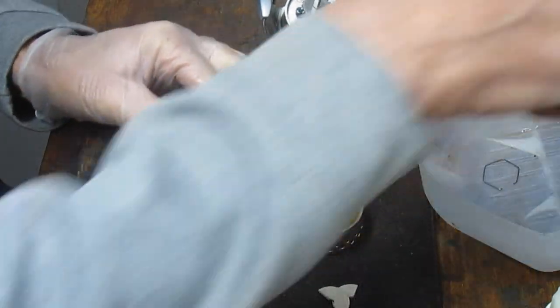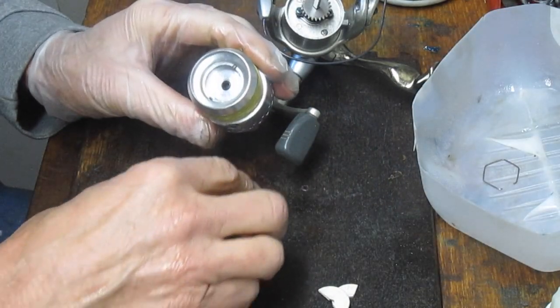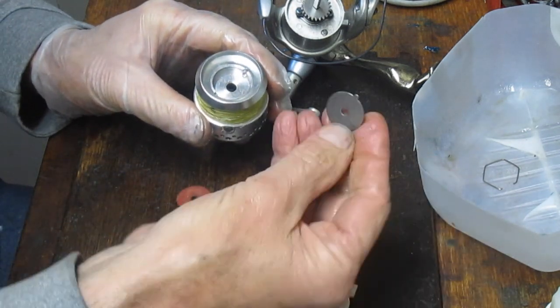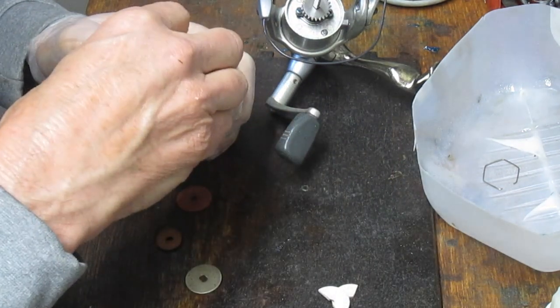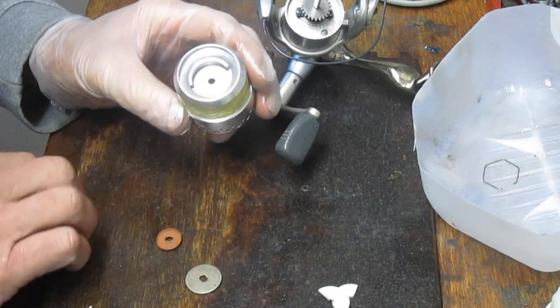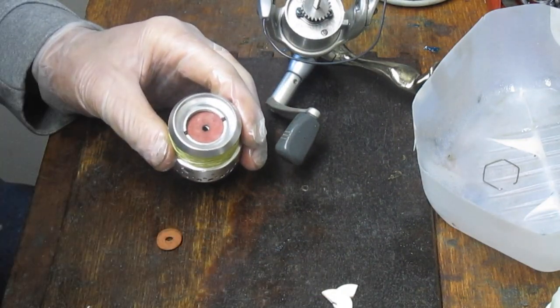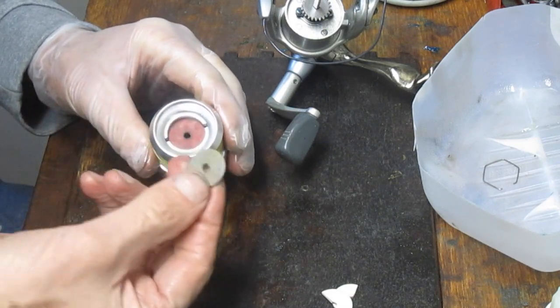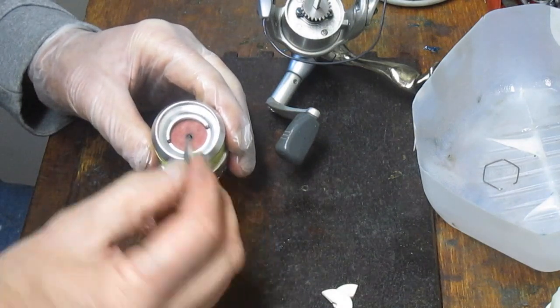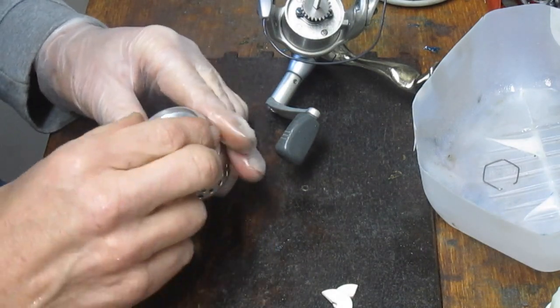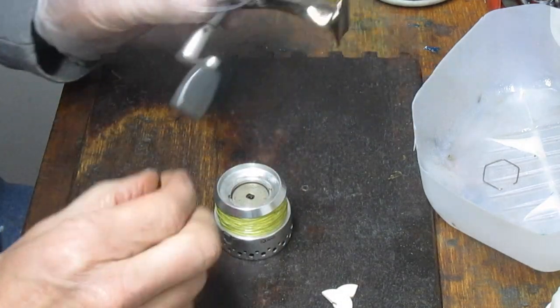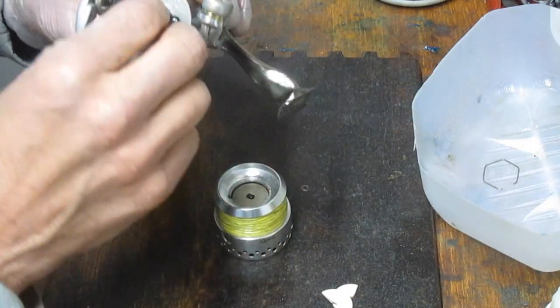All right. So according to that then, what we want to do is we want to put that eared washer in first. We had the red one down below there. Then we want to put the red one in. Now that white one would be next, but we don't have a white one, so I'm going to use this. It's about the same thickness. We'll put that in the middle there.